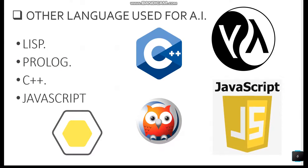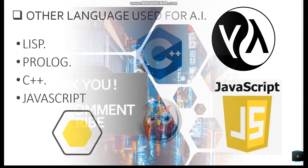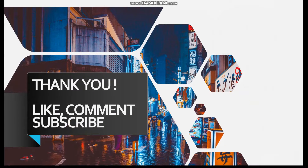Other languages used for the implementation of artificial intelligence are Lisp, Prologue, C++, and JavaScript. These languages can be used to develop artificial intelligence. But the most important thing is that the best choice for the implementation of artificial intelligence is Python.